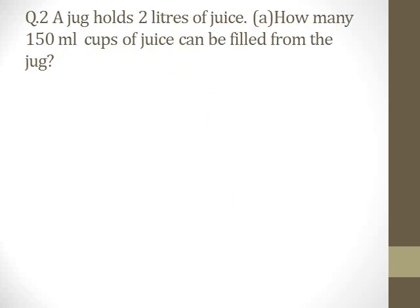Now moving to question number two: a jug holds 2 liters of juice, and there are two parts — part A and part B. In this slide we are going to solve part A. Part A is asking: how many 150 ml cups of juice can be filled from the jug? The question gives you the capacity of the jug and of the cups, and asks how many cups can be filled.